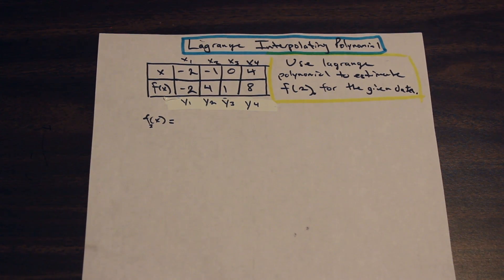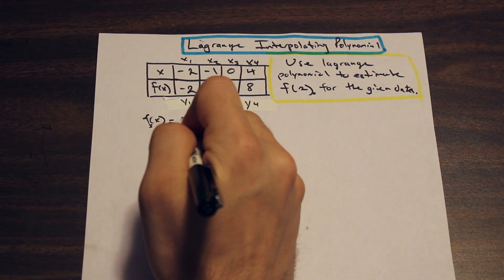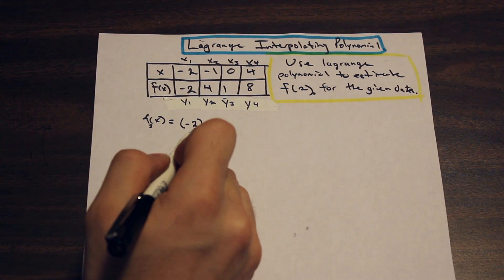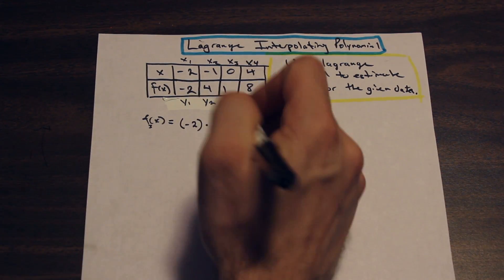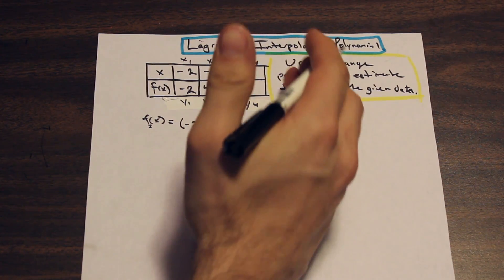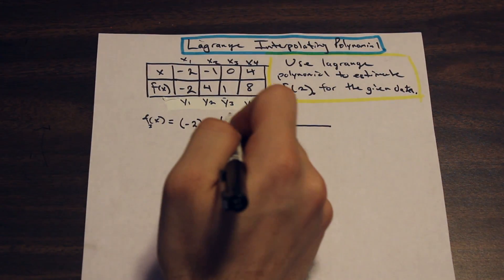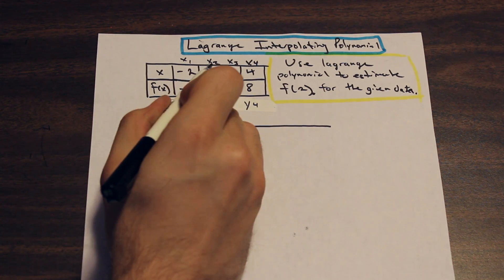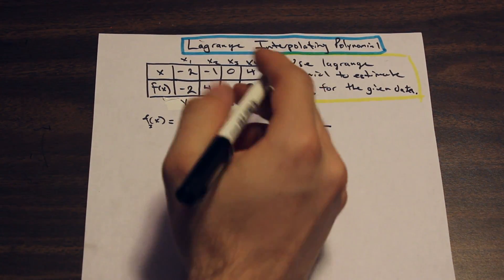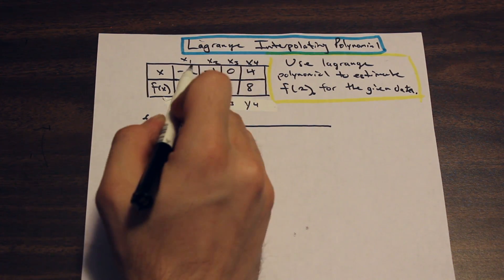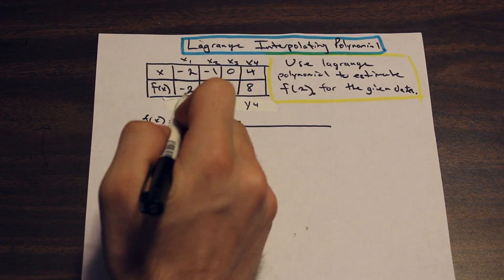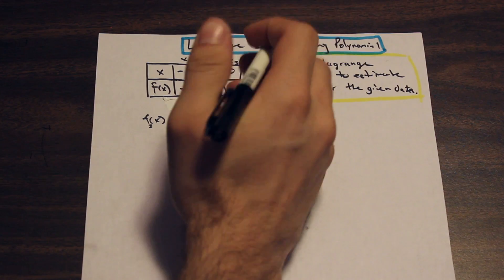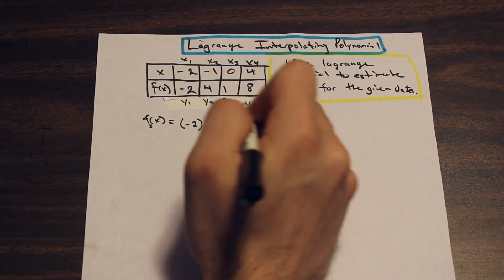The first thing we do is go to y1 and write it in brackets. We're going to start by writing x — this is a variable, don't confuse it with x sub 1 or x sub 2. In the numerator of each term of the Lagrange interpolating polynomial, we have this variable x, and we're going to subtract each entry in the table that is not the one we're currently working on. Since we're on y1, we will not include x1 in the numerator. So we start at x2.